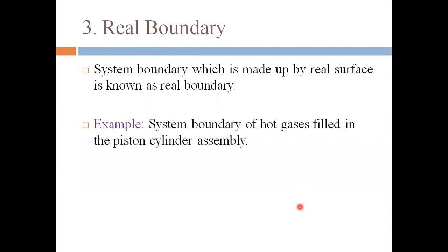The third type is a real boundary. A real boundary is the system boundary which is made up of a real surface. For example, a pressure cooker or a piston cylinder — both are made of real physical surfaces. So this boundary is known as a real boundary.